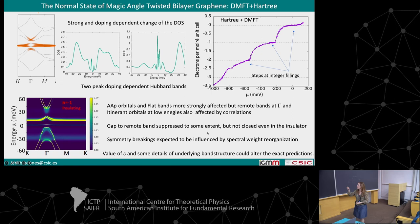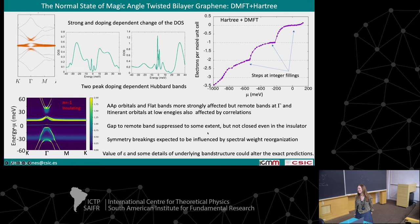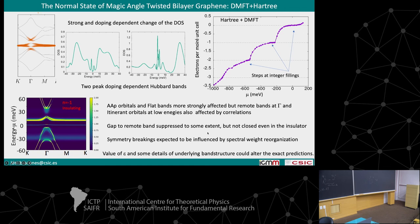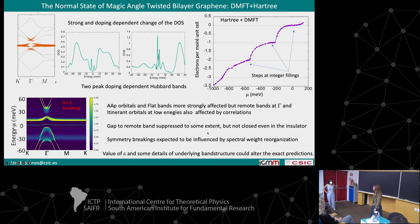First question: at n equal minus two, do you think we have a real gap or not? It's not yet an insulator. I think that if I increase the interaction slightly, it will be an insulator — it's about to be an insulator.